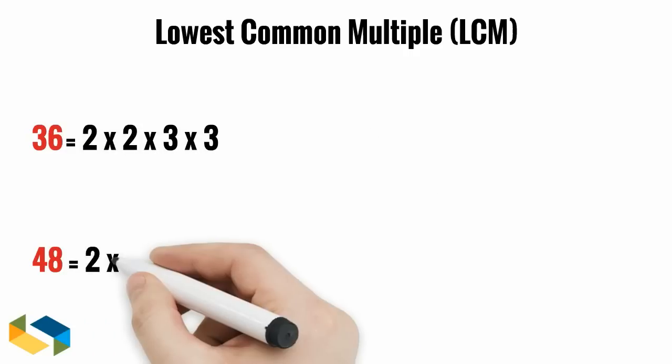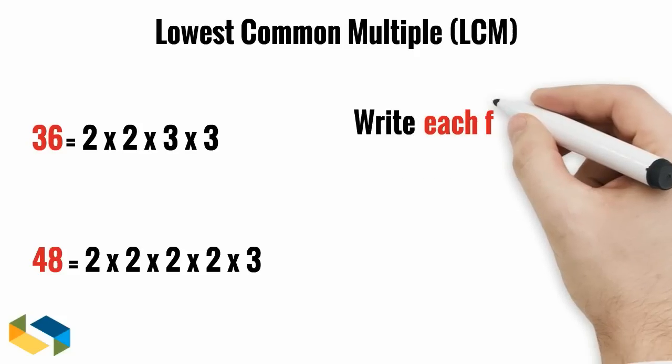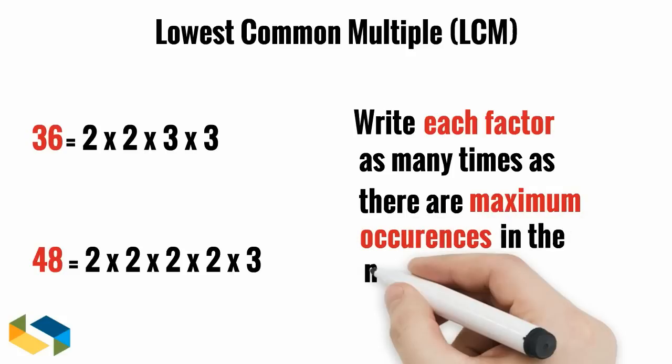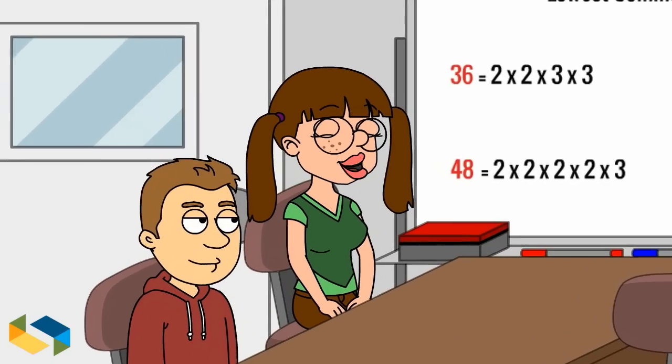The first step again is to write 36 and 48 as the product of their prime factors. The next step is to write each factor as many times as there are maximum occurrences in the numbers 36 and 48. Can you please elaborate Mr. Roy?